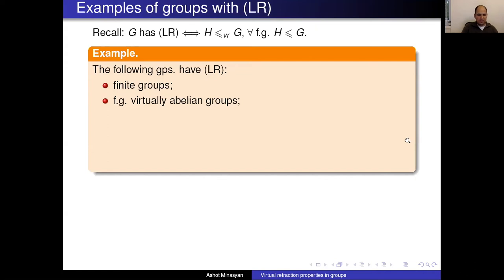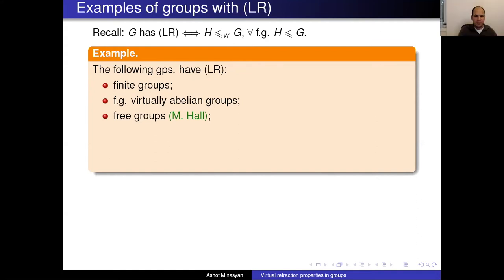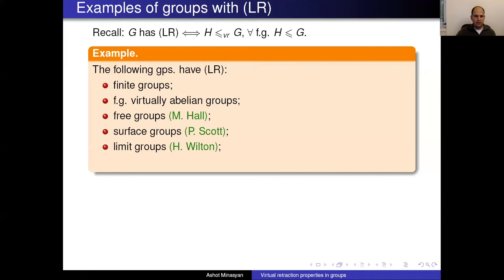Free groups in particular have property LR by Marshall Hall's theorem — every finitely generated subgroup is a virtual retract. Peter Scott proved the same thing for fundamental groups of closed oriented surfaces; basically in the same paper where he proved that surface groups are LERF, his method really proved the stronger fact that surface groups have property LR.